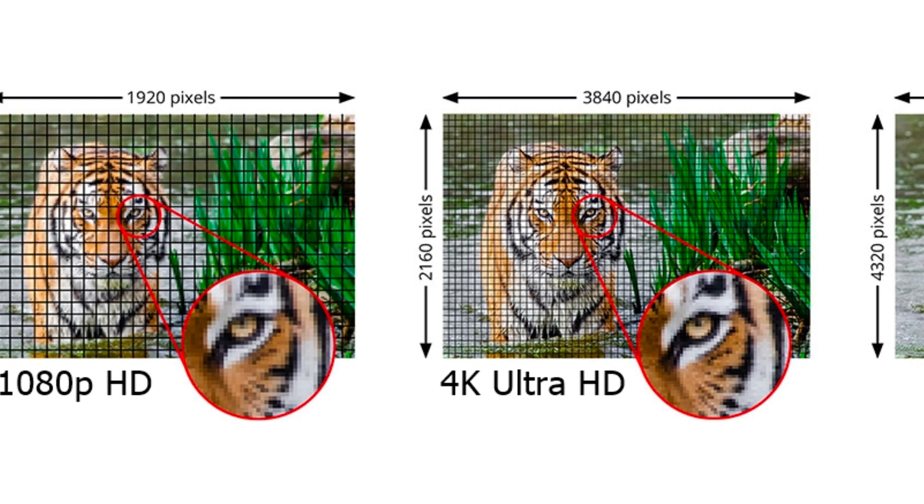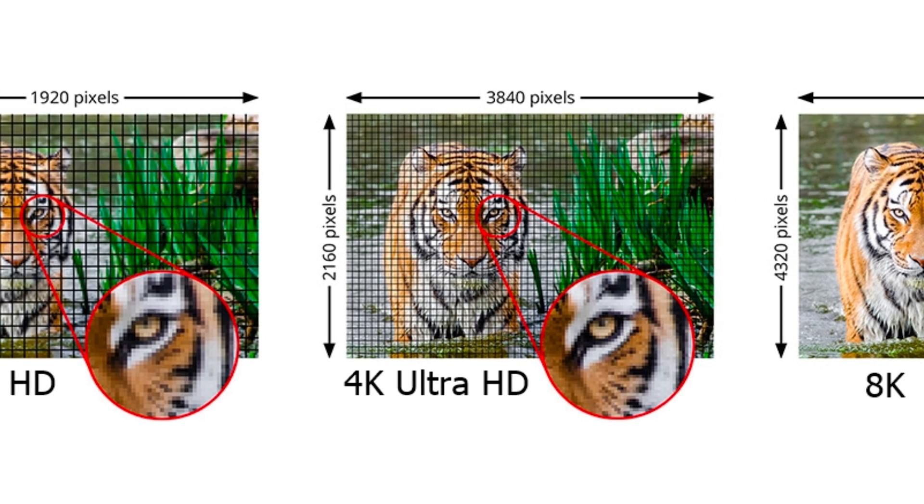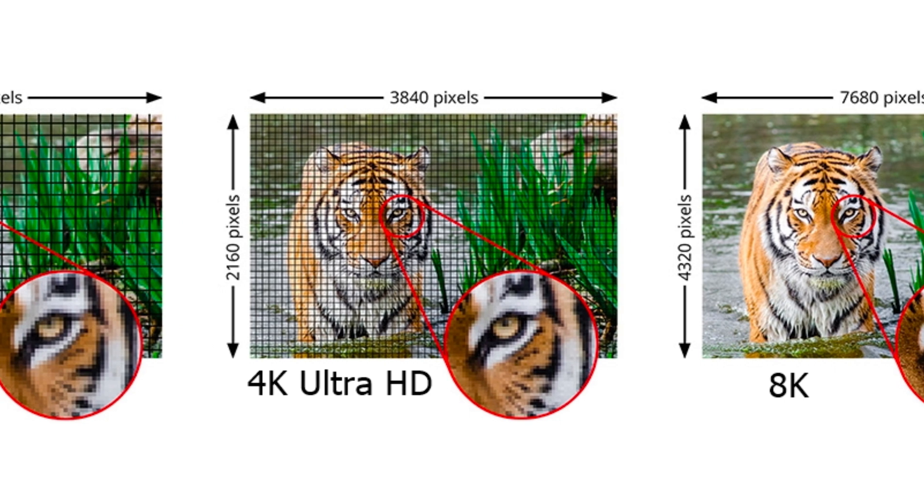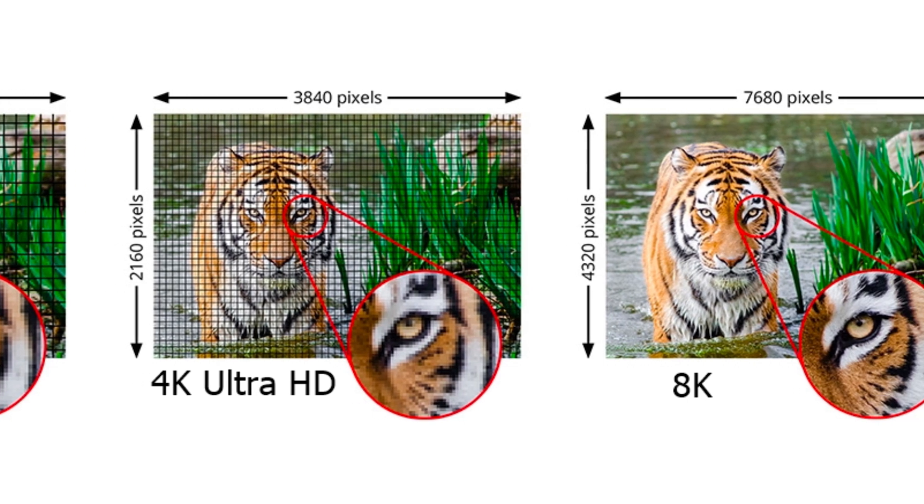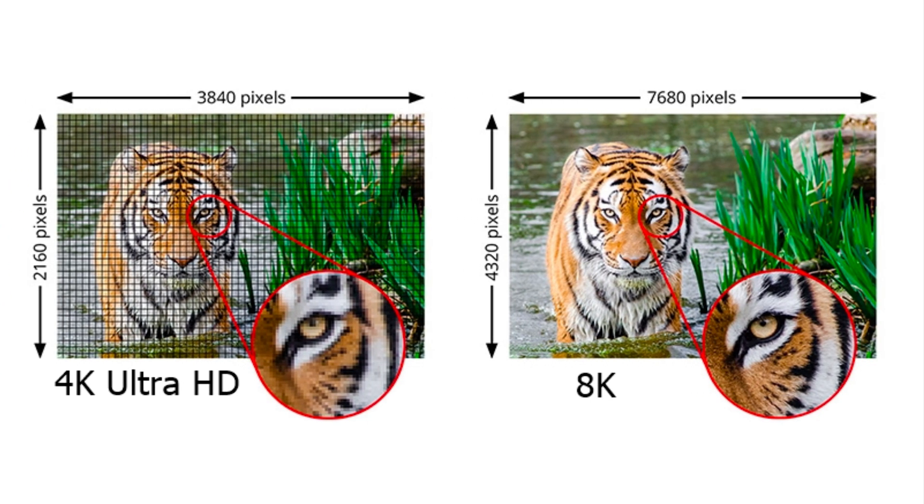HDMI 2.1a supports 8K 60Hz and 4K 120Hz signals, as well as 5K and 10K resolutions at lower refresh rates.